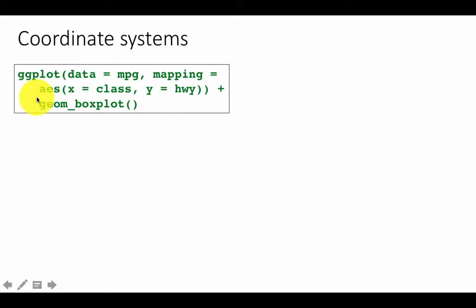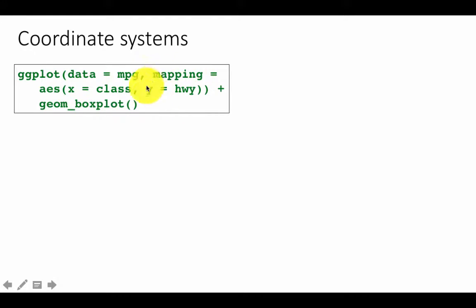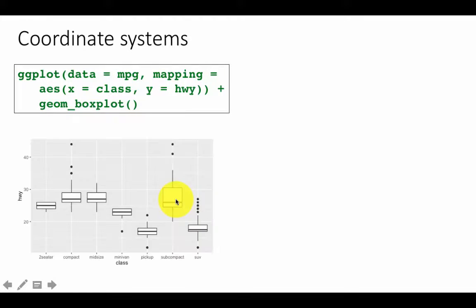Now let's look at coordinate systems. Here's how you plot box plots: ggplot with data equals mpg, mapping aesthetic x equals class. In the mpg dataset the class attribute represents the class of each vehicle — compact, subcompact, luxury, etc. — and y is highway mileage. This gives a separate box plot for every class of vehicle showing the distribution of highway mileage for each class.